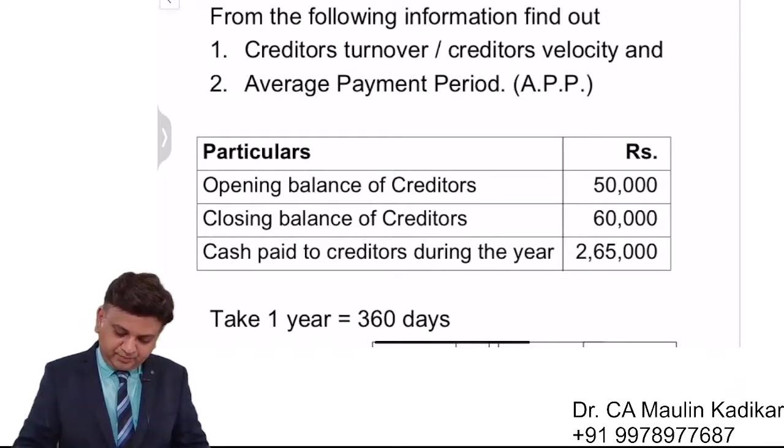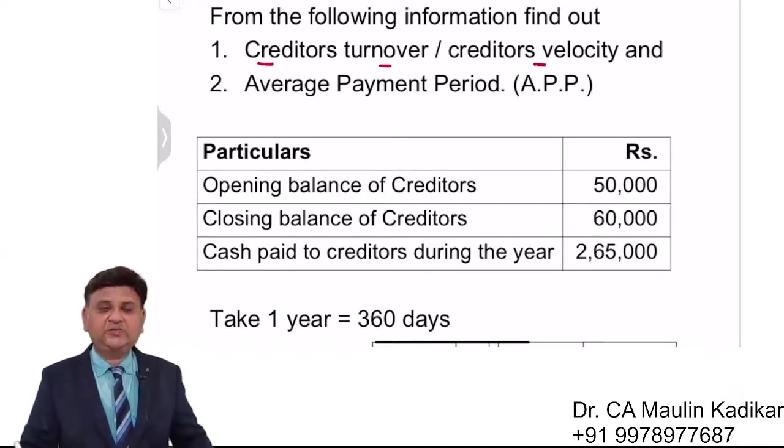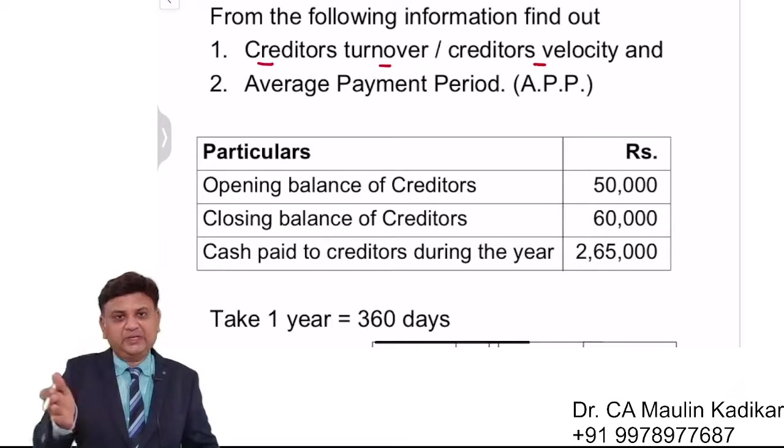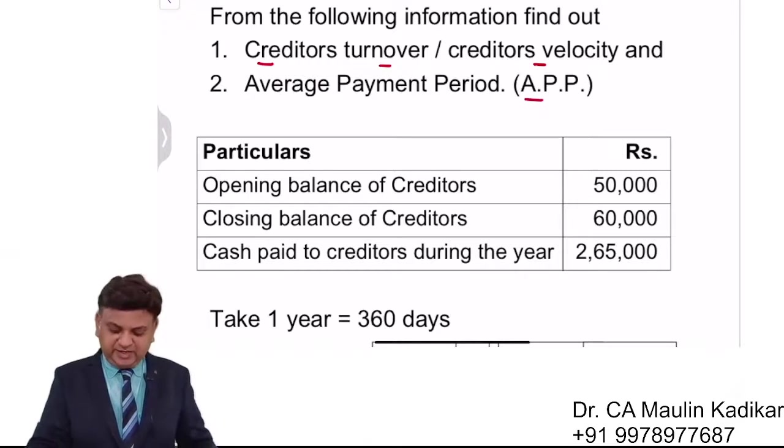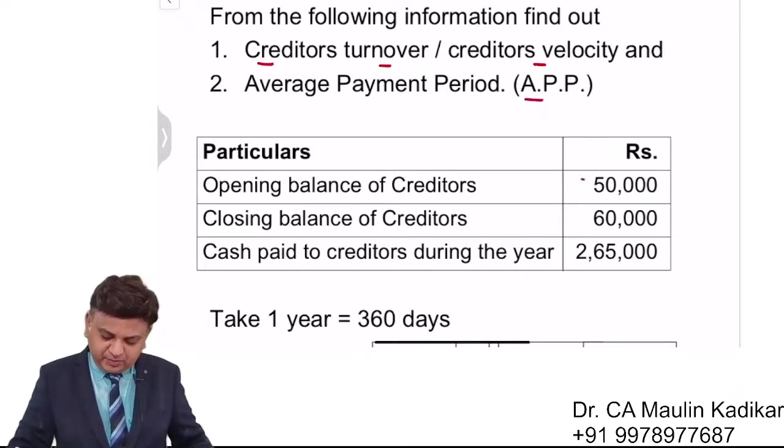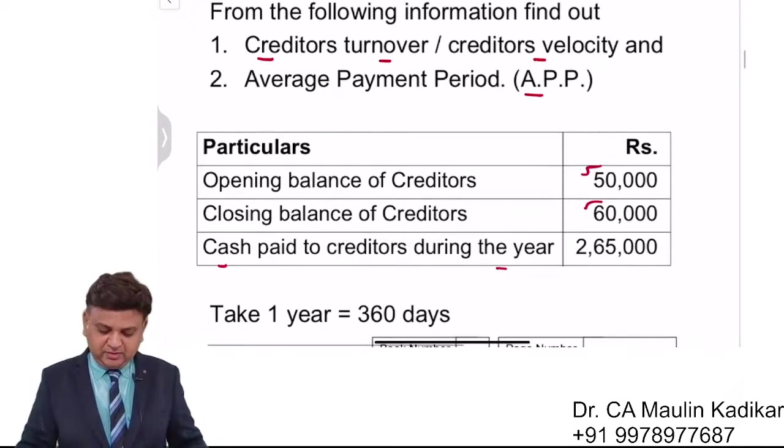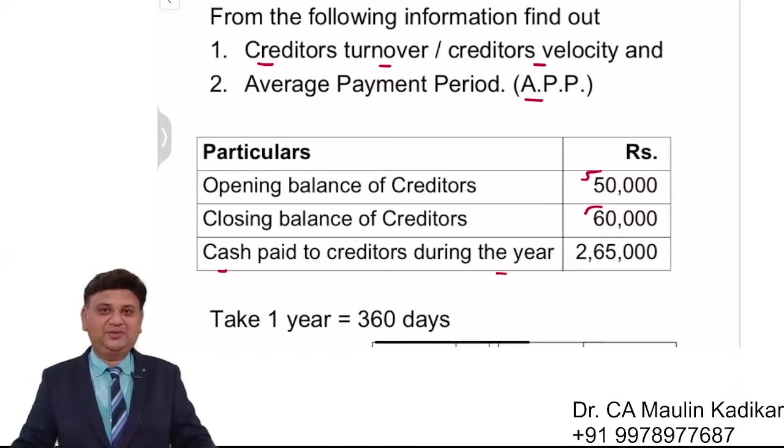Next question: from the following information, find out creditors turnover ratio or creditors velocity - how many times the creditors are getting rotated in a year - and average payment period or the credit period that we get. We have been provided with opening creditors, closing creditors, and cash paid to the creditors as given. Try to calculate the answer on your own.